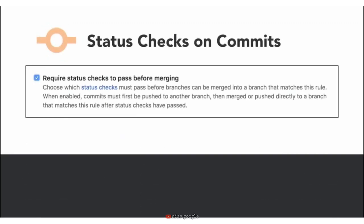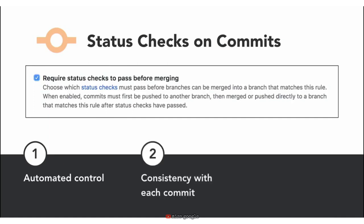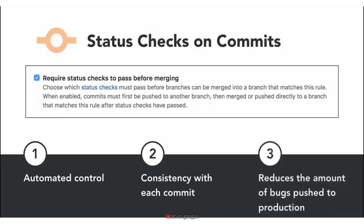One last branch protection I want to point out is one that requires specific status checks to pass before merging. This requires that specific statuses are met every time a change occurs to that branch, such as when a commit is added. These automated builds and tests run with every commit to ensure consistency, which reduces the amount of bugs and issues that are pushed into production.